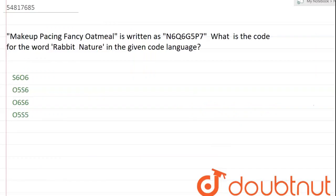Hello friends, welcome to Doubtnet. Let's see a question. In a code language, makeup pacing fancy oatmeal is written as N6Q6G5P7. What is the code for the word rabbit nature in the given code language? Let's decode the code language.